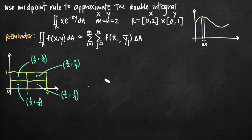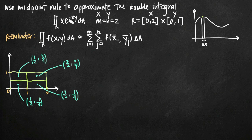Now we have all four midpoint coordinate points. To approximate the volume above the large rectangle and below the function, we plug each of these coordinate points into our original function, take the sum of the results, and multiply that sum by delta a.